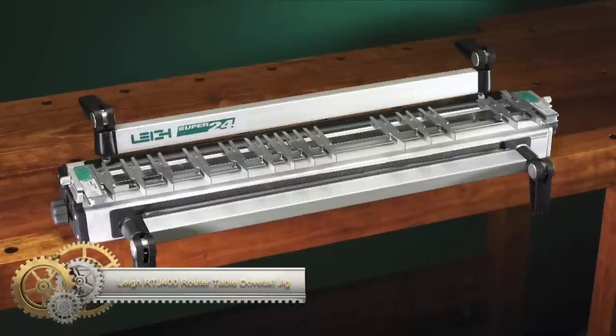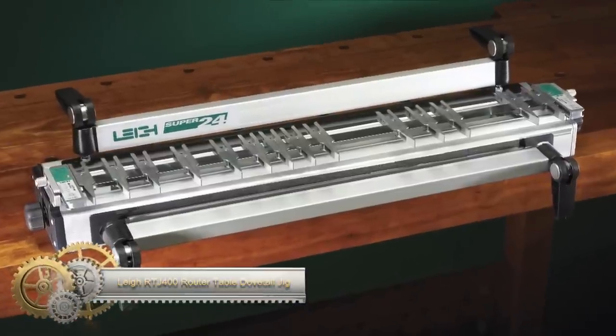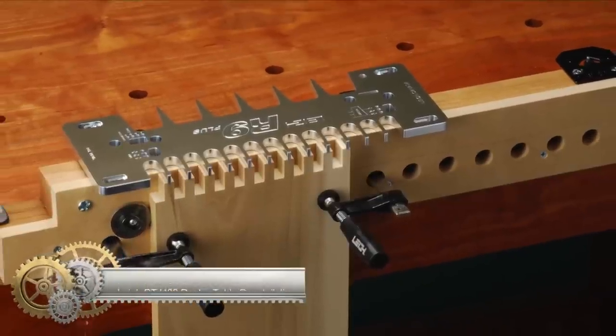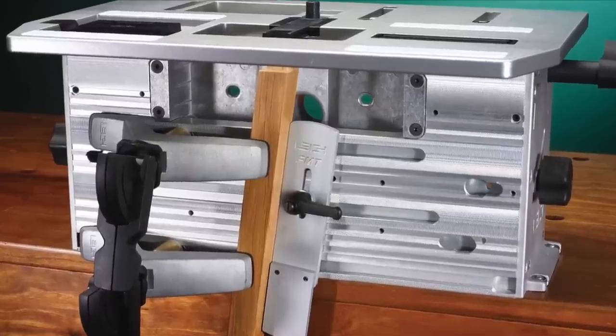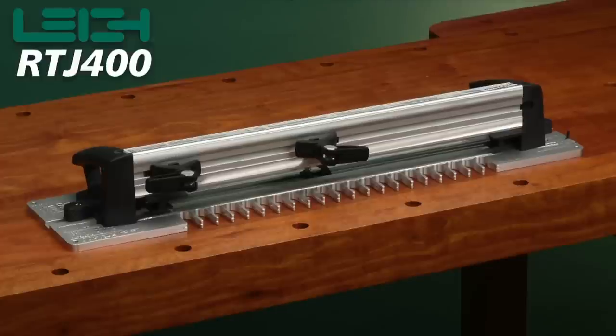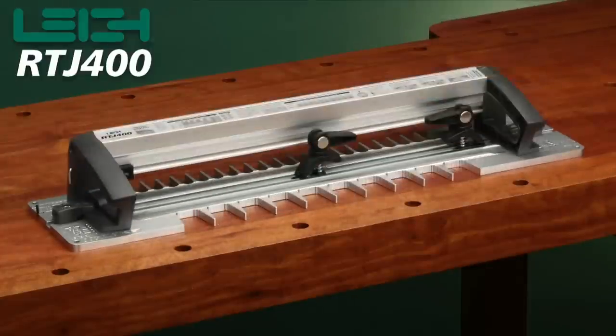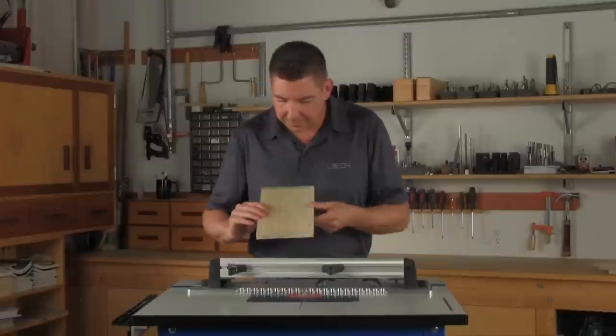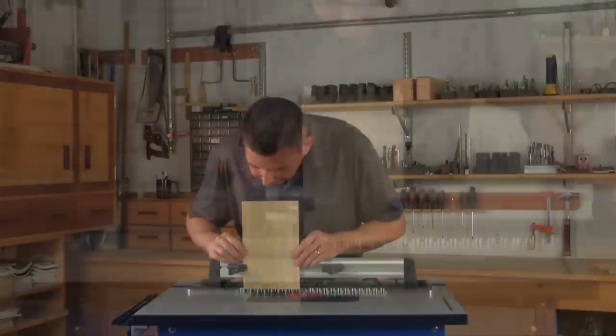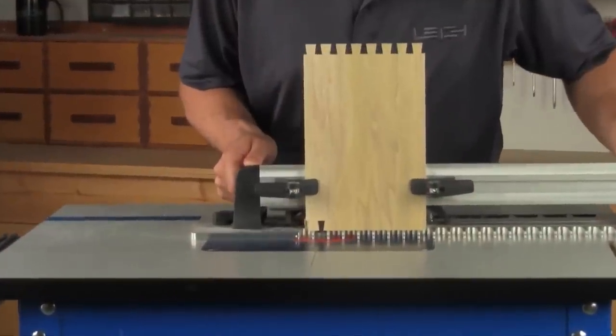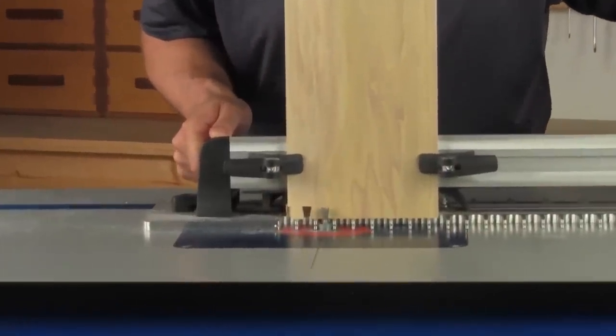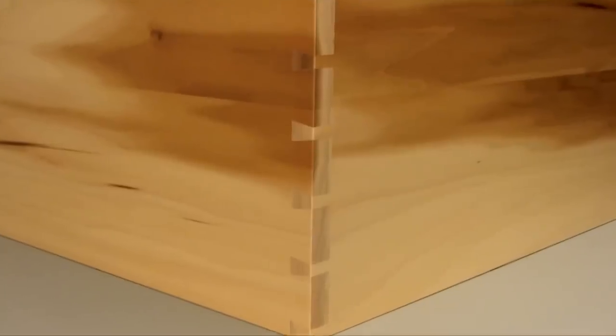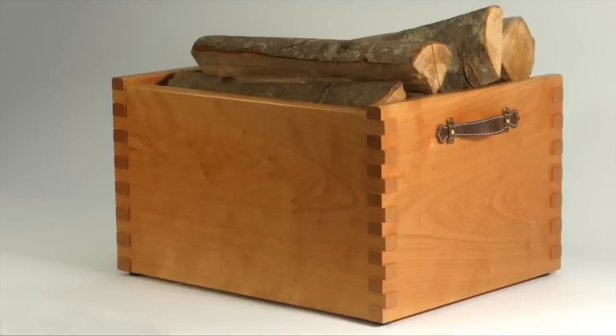The Leigh RTJ-400 router table dovetail jig is a precise tool for creating consistent dovetail joints. The jig comes with numerous templates, enabling you to craft various sizes of dovetail and box joints with ease. Its straightforward setup makes it suitable for beginners and compatible with most router tables. While its cost may be seen as high compared to other dovetail jigs, its quality and performance justify the price.